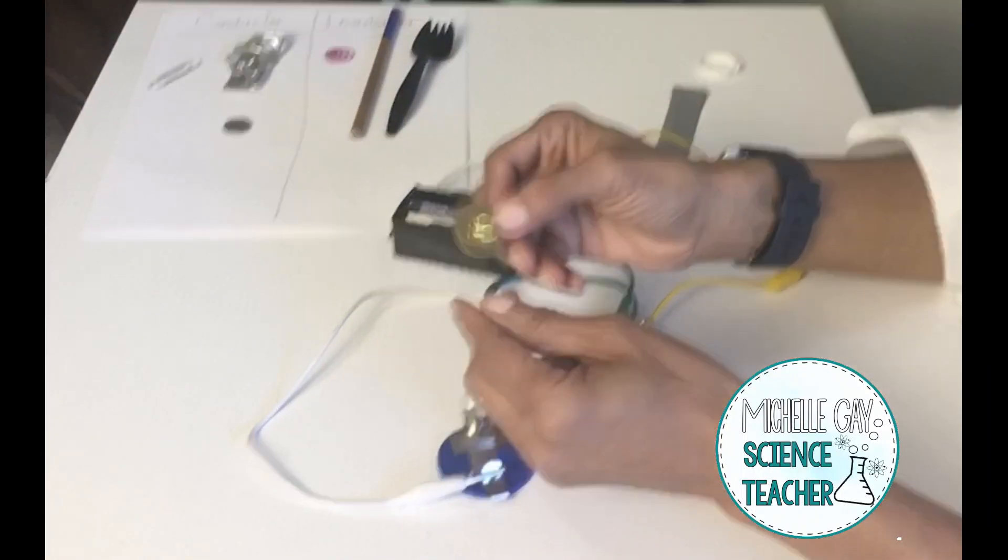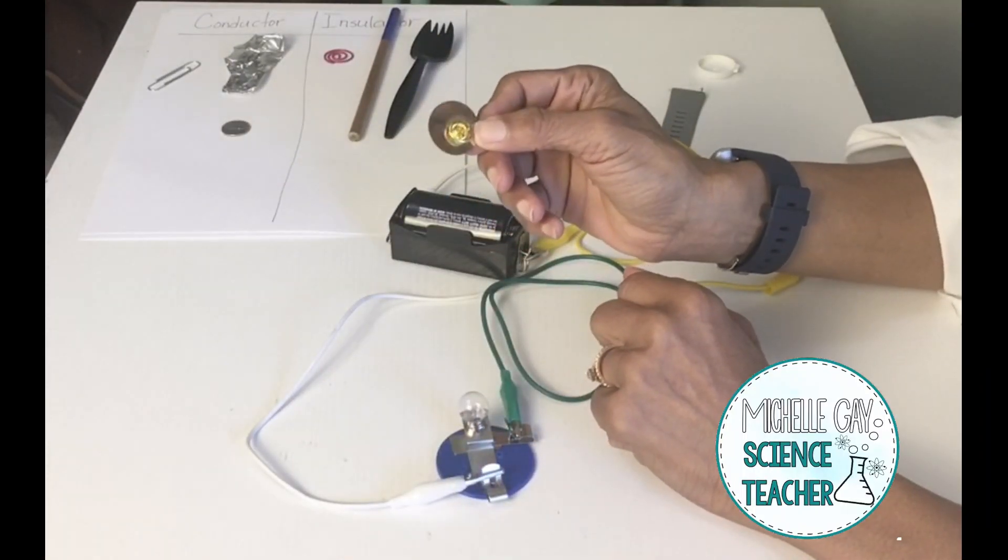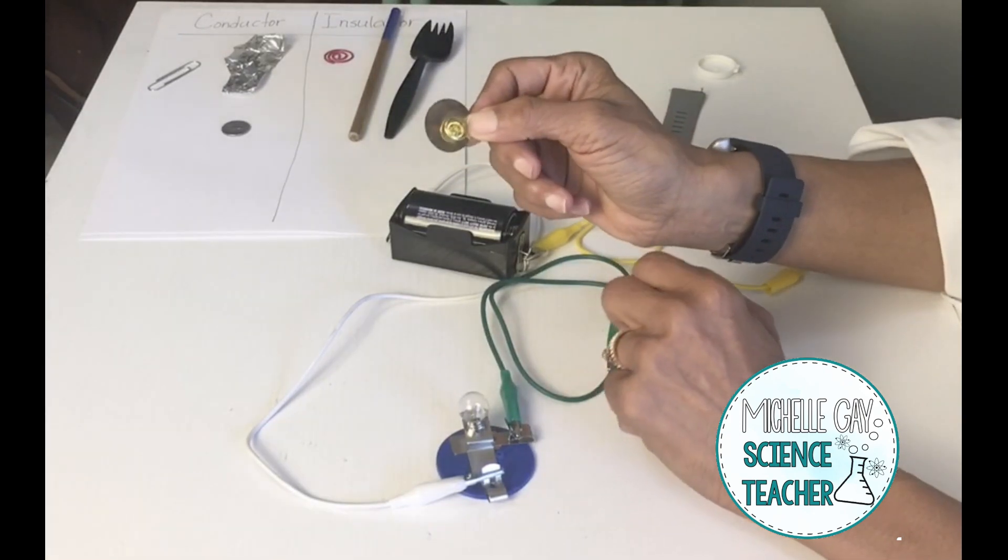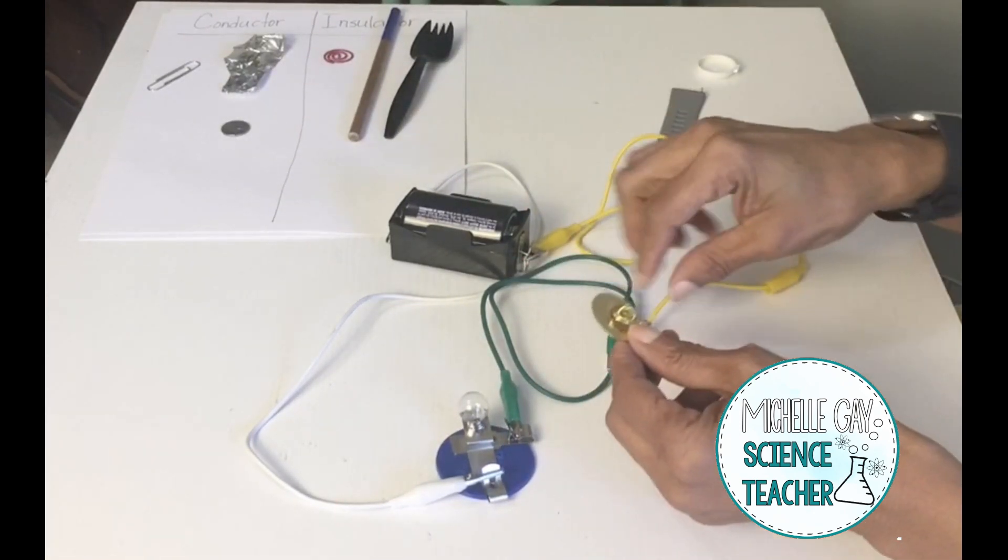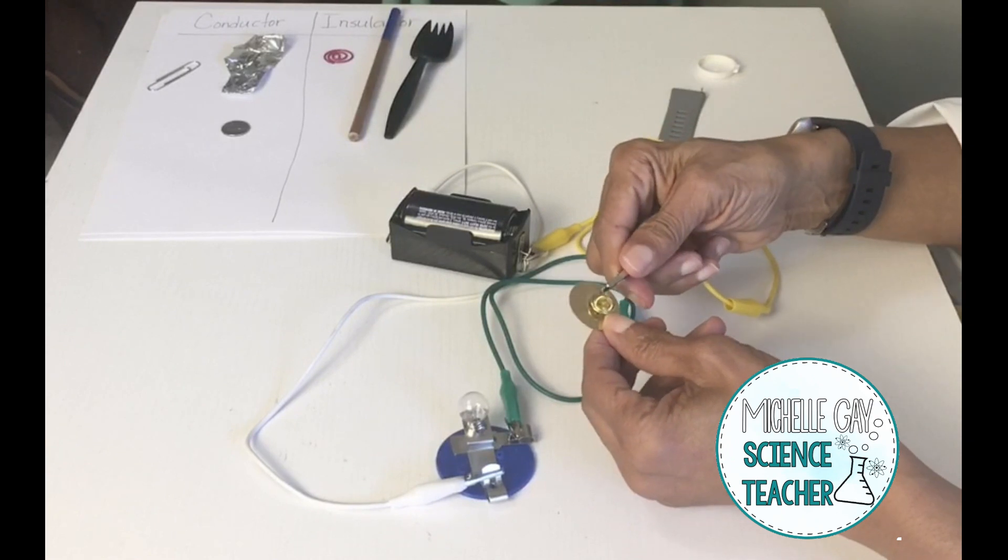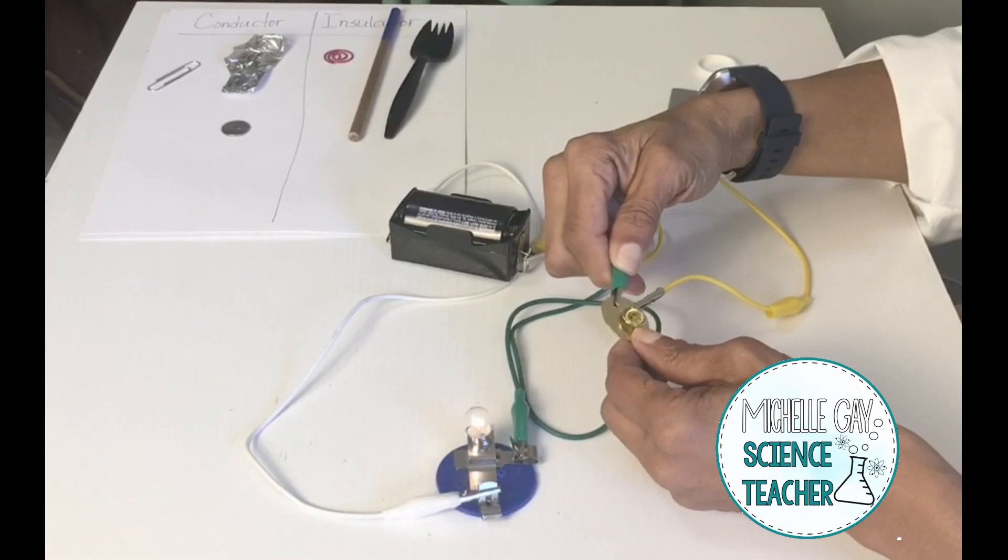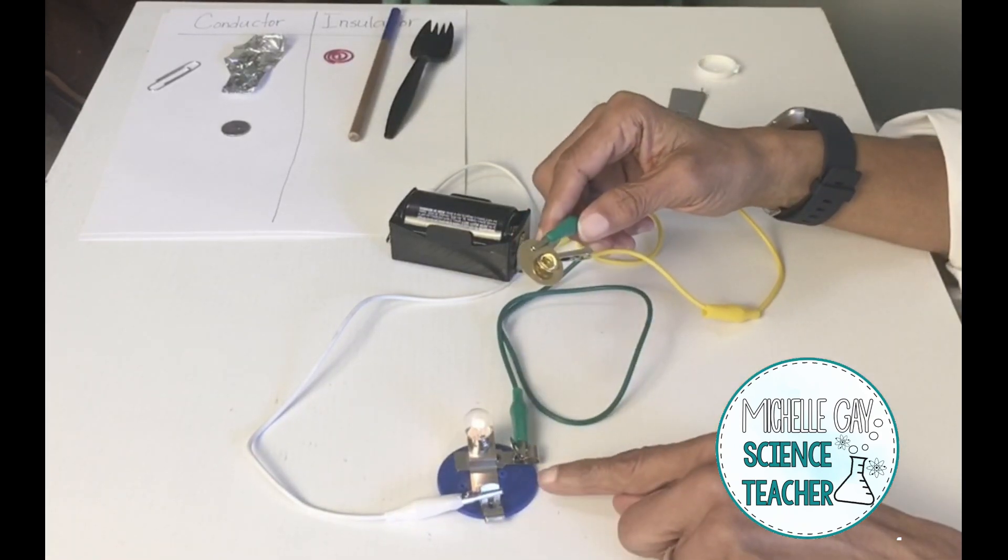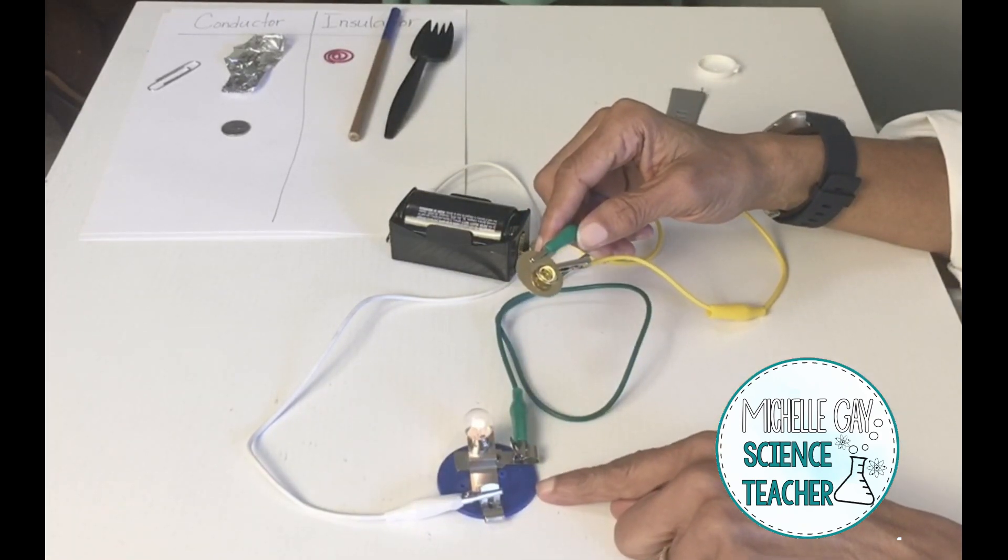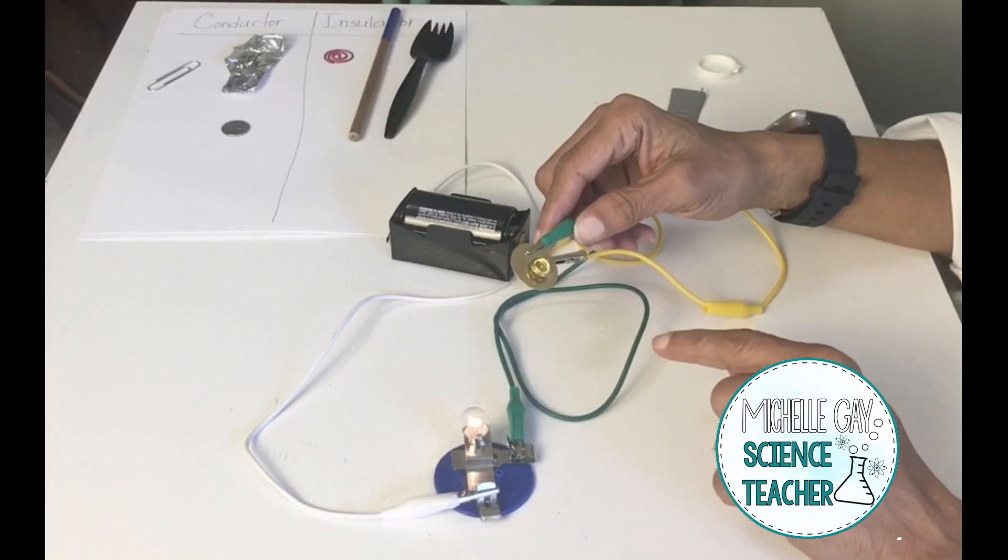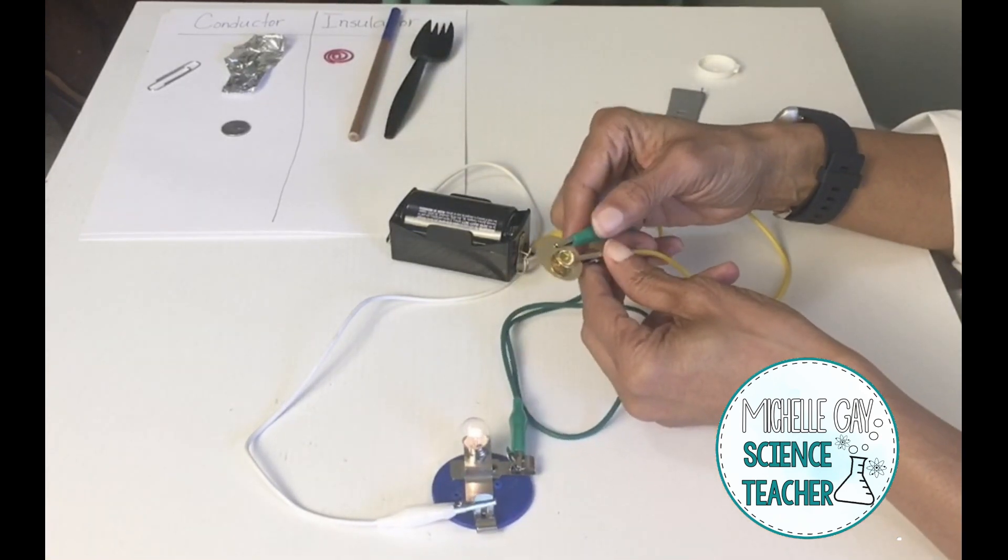We have this gold pin or this pin. Do you think it's an insulator or a conductor? Let's see. It is a conductor. The light has come on and the current is flowing and our circuit is complete.